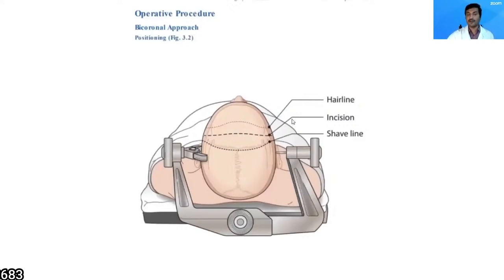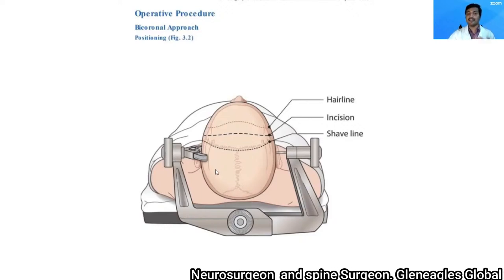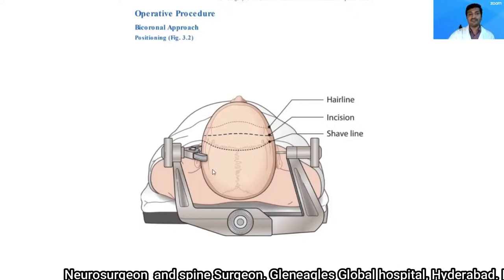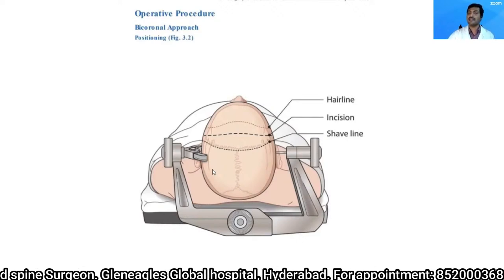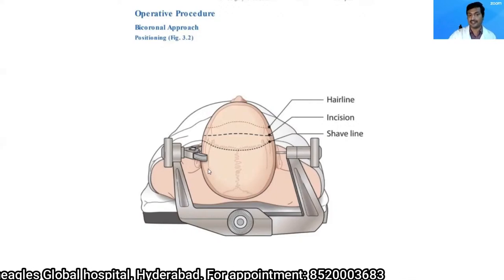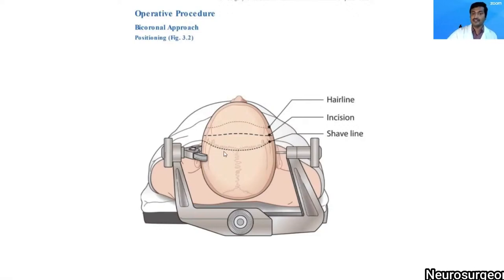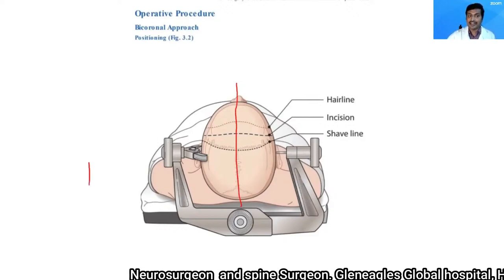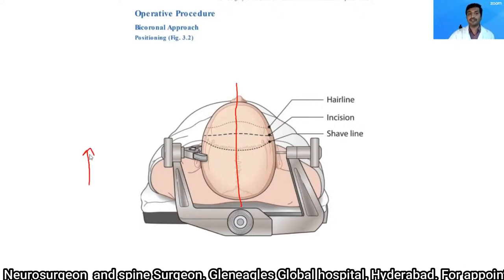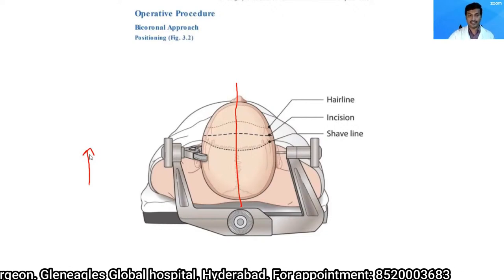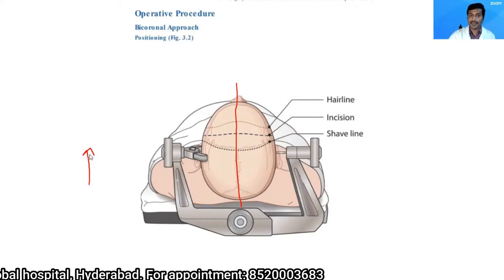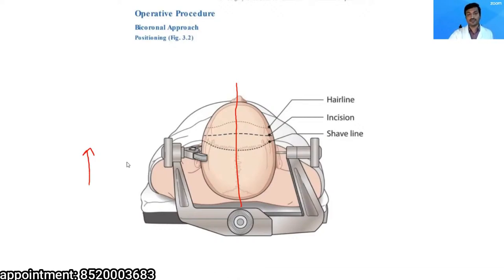For operative positioning, in my personal experience, if I'm planning a bicoronal technique I prefer rigid immobilization in a three-pin headrest. Sometimes if you need to save time, you can position on a horseshoe headrest. I keep the head neutral in the midline and slightly elevate the head end above the heart level. This ensures adequate venous return, decreases swelling of the brain, and also decreases venous ooze.